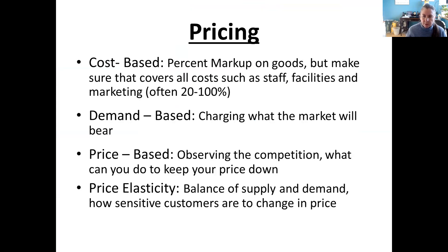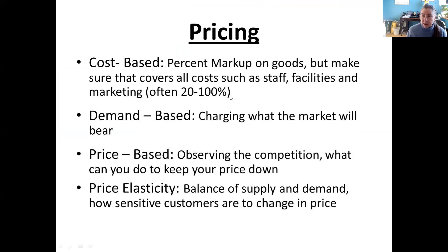And now on to marketing controls. The first thing we'll look at is pricing. There are different ways to set up your pricing — you may do it all the same throughout your business or you may use different models. Cost-based is: what is the cost of the item and we add a percent to that. You have to make sure you're covering all your costs — staff, facilities, marketing, insurance — everything has to be covered. 20% may be enough; 100% may not be enough. It's going to depend on your business model. You want to make sure that your markup times your volume covers all your expenses and leaves some money over.